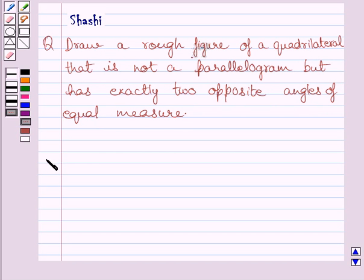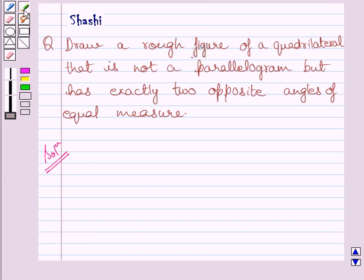Let us now start with the solution. Now we need to draw a rough figure of a quadrilateral that is not a parallelogram but has exactly two opposite angles of equal measure.